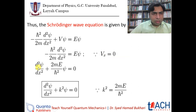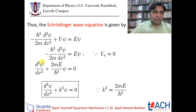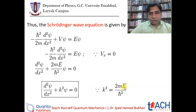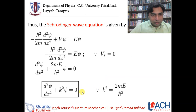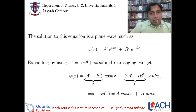We rearrange the equation by multiplying both sides appropriately, and we define the factor 2mE over h-bar squared as k squared. So k² equals 2mE over h-bar squared. This is the standard substitution used for this type of differential equation, giving us d²ψ/dx² equals minus k²ψ.